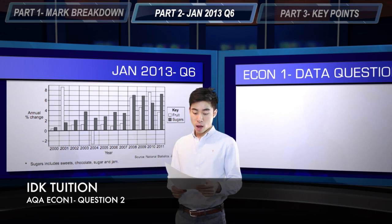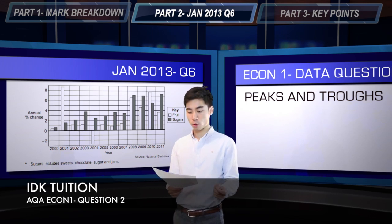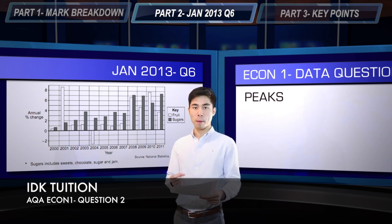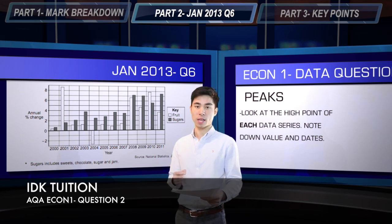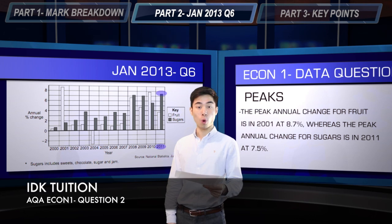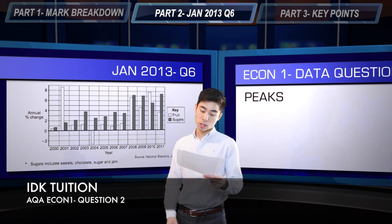On the vertical axis, both series are measured in percentage annual change. The first type of point of comparison is peaks. All you're going to do is look at the high point of each data series and note down the dates and the actual percentage change. In this case, the peak for fruit is in 2001 at about 8.7%, whereas for sugars the high point is in 2011 at about 7.5%. There is some margin for error in mark schemes.